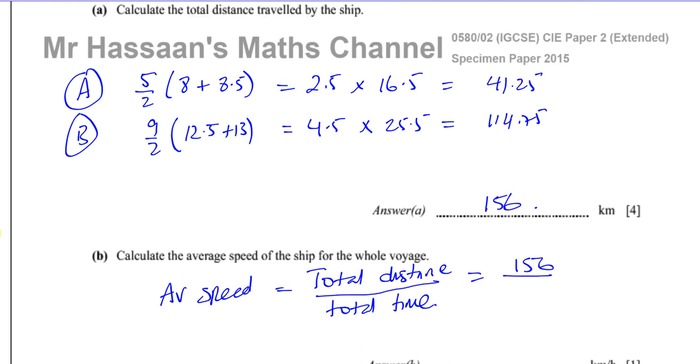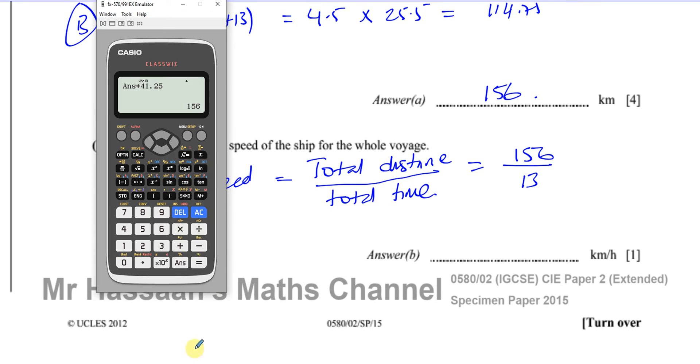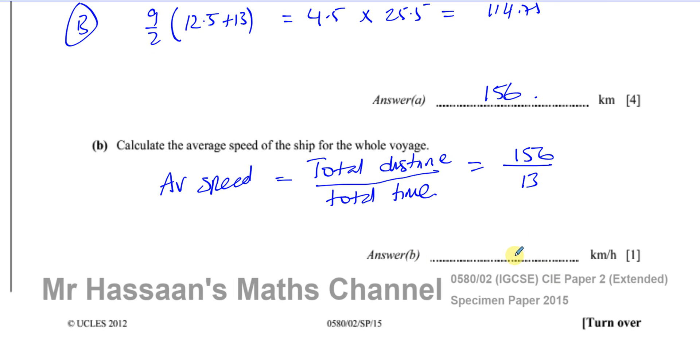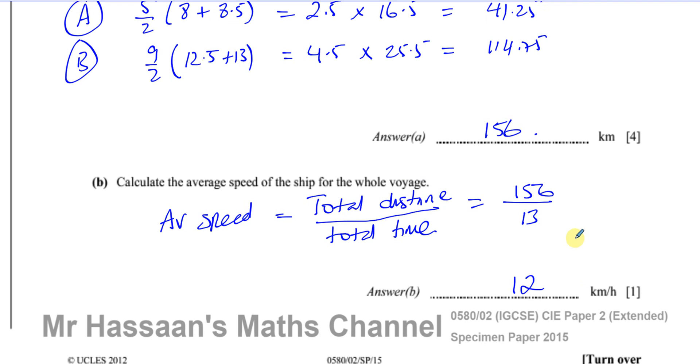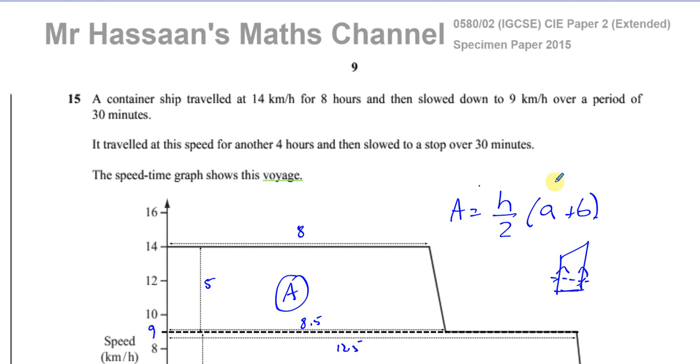As simple as that, that's why it's only worth one mark. It's just simply dividing your last answer that you got by 13, and that gives you 12 kilometers per hour. And there's the answer to this question. And that's question 15 done.